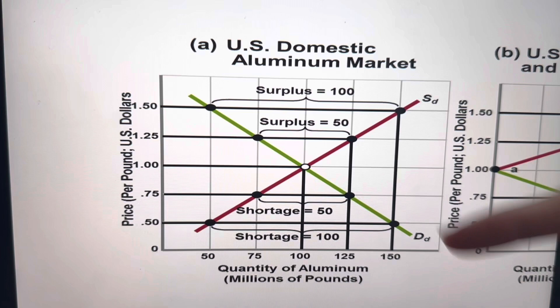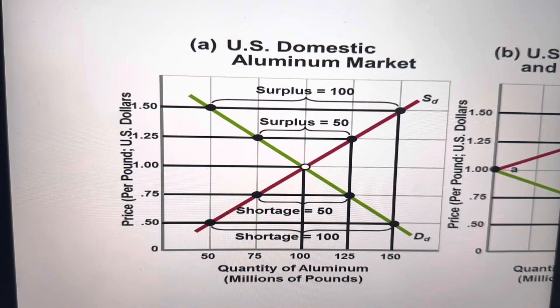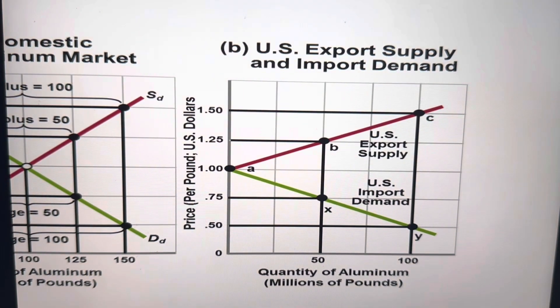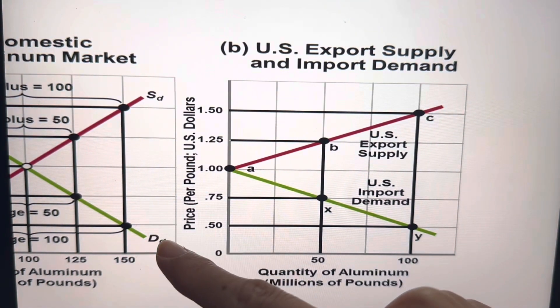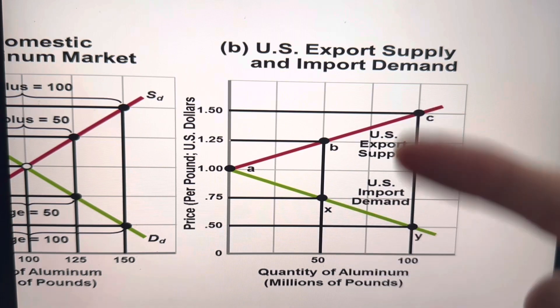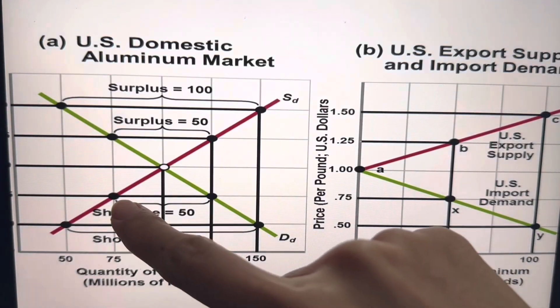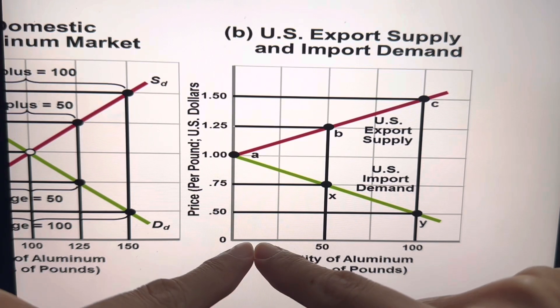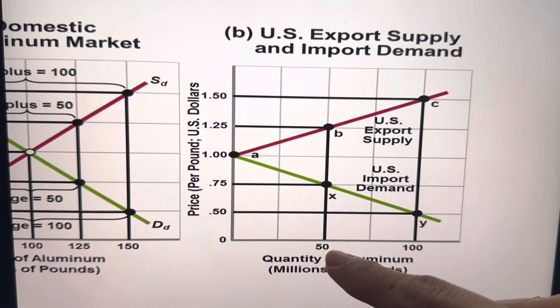What shortage means is that U.S. needs to buy it from other countries. So that is why now if you look here on the right-hand side, when we have a shortage, the country needs to import. As you can see earlier, the shortage is 50. Therefore, the U.S. needs to import 50.